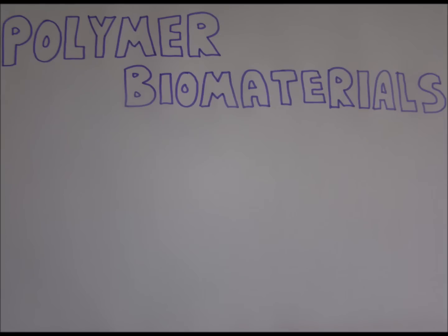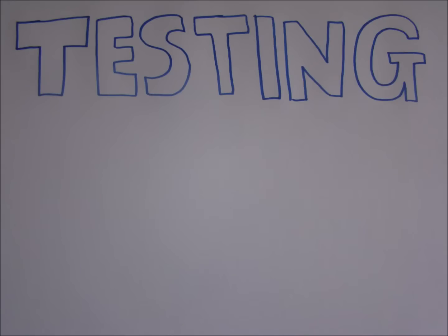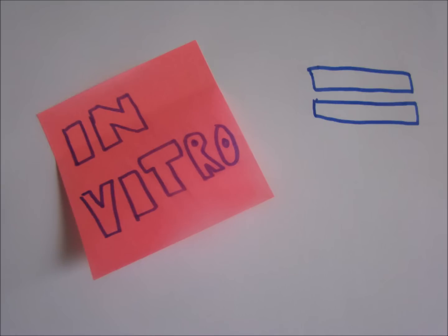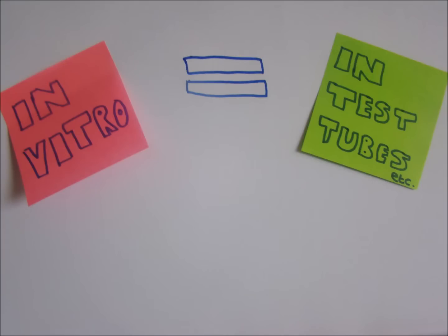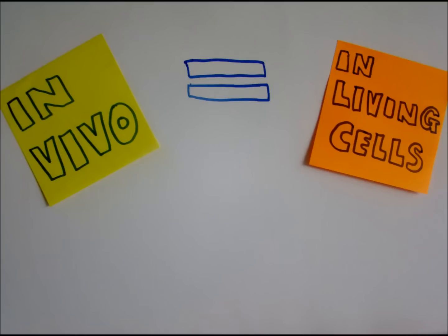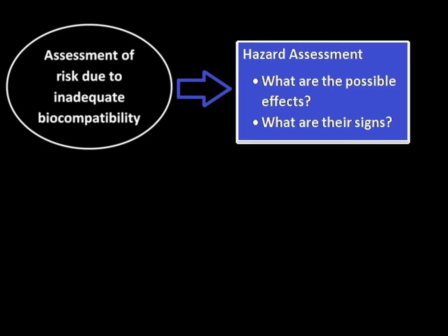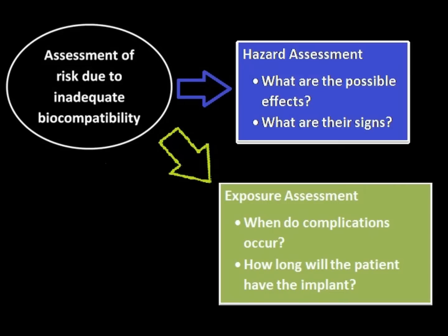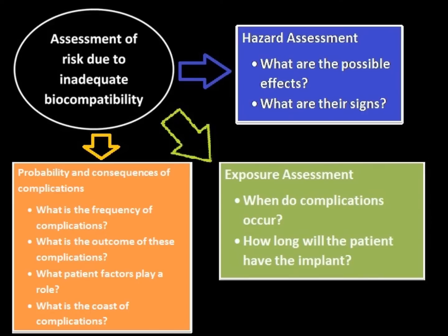For a polymer to be usable as a biomaterial, it has to undergo thorough testing. Firstly, in vitro testing to ensure biocompatibility of the material in conditions of intended use. Then, animal models and in vivo testing to fully determine biocompatibility of a device or material in real conditions. Risks associated with bad biocompatibility are a combination of exposure, effects on the recipient, and possible complications.